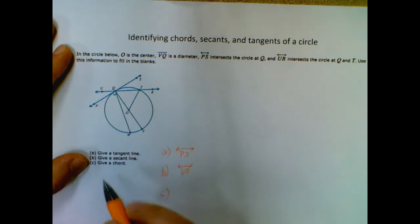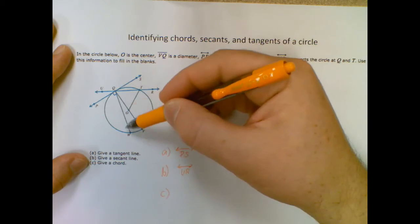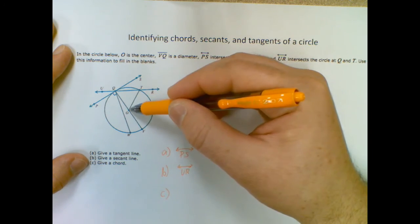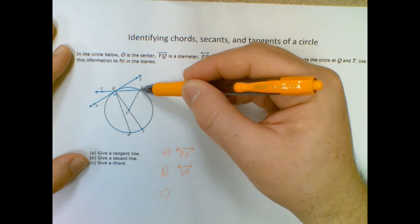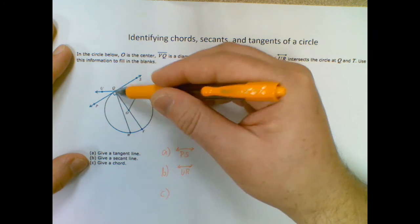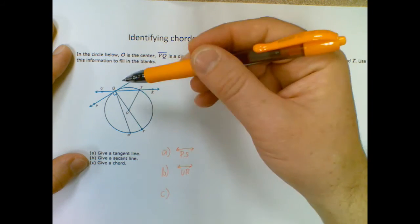A chord is a line that goes through and hits the circle twice, but it has to hit the outside of the circle twice. So notice OT here is a radius because it goes from the center to the outside. I need one that goes from the outside to the outside, so I'm going to go ahead and go with this one, since it's usually the one they look for.